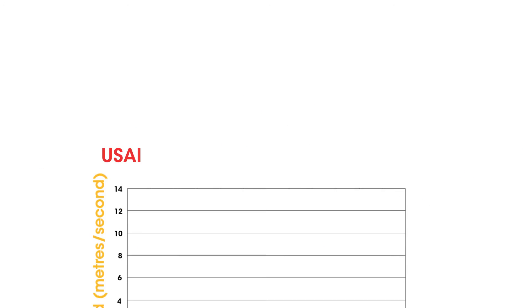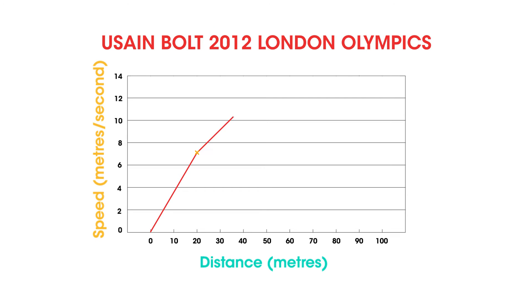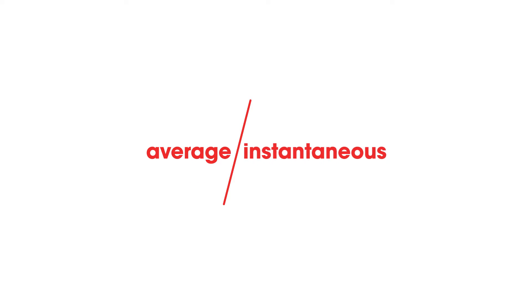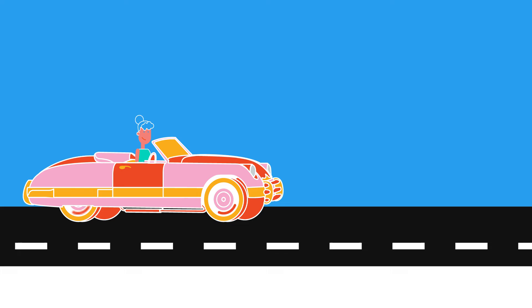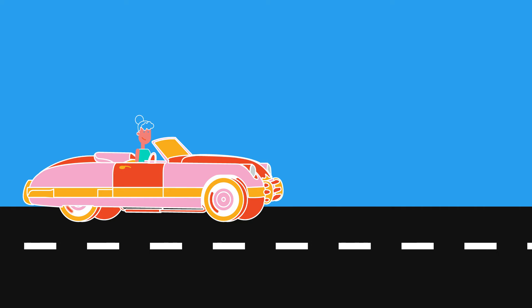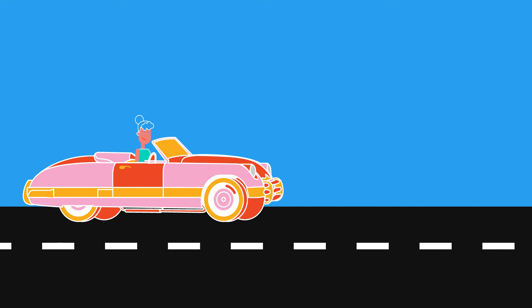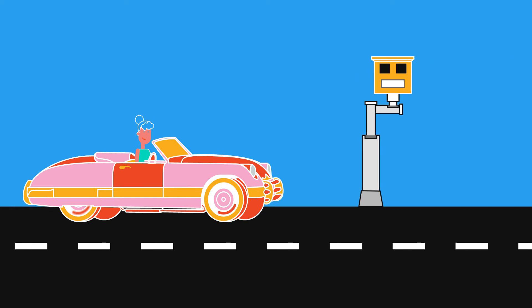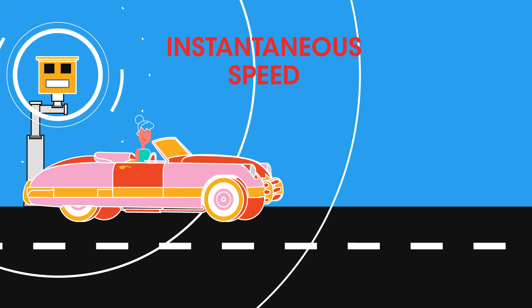This is where we need to consider the difference between average speed and instantaneous speed. Consider a car: a speed camera detects its actual speed at the time it passes the camera — its instantaneous speed.